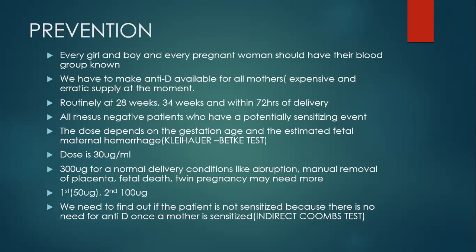The volume of blood also determines whether a mother gets sensitized. To prevent this condition, we need to know blood groups, have anti-D available, and give anti-D to mothers at every sensitizing event. It should also be given routinely at 28 weeks, at 34 weeks, and after delivery within 72 hours. If the mother doesn't receive anti-D within 72 hours of delivery, she should get it within at least 10 days. The dose depends on gestational age: first trimester 100–150 micrograms, second trimester 100–150 micrograms, third trimester 300 micrograms. The dosing formula is 30 micrograms for every milliliter of fetal blood in the mother's circulation.